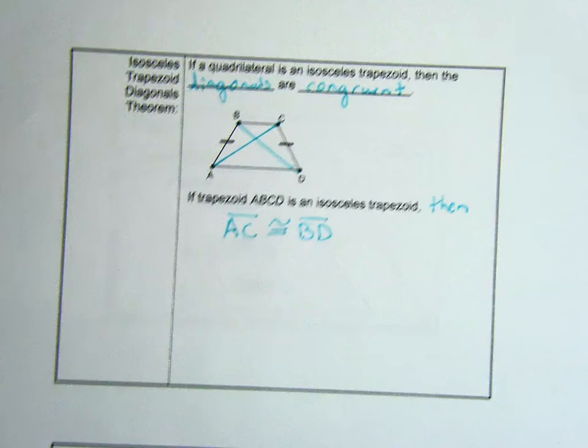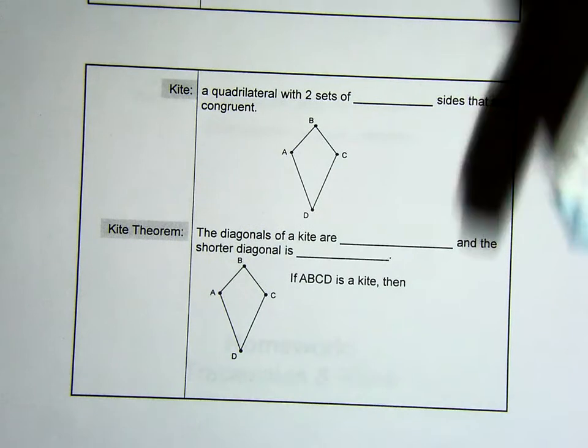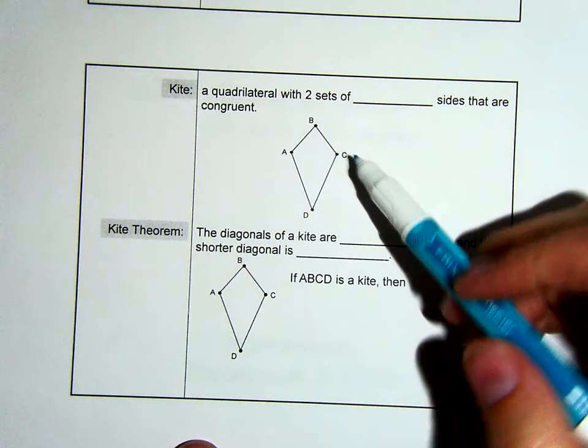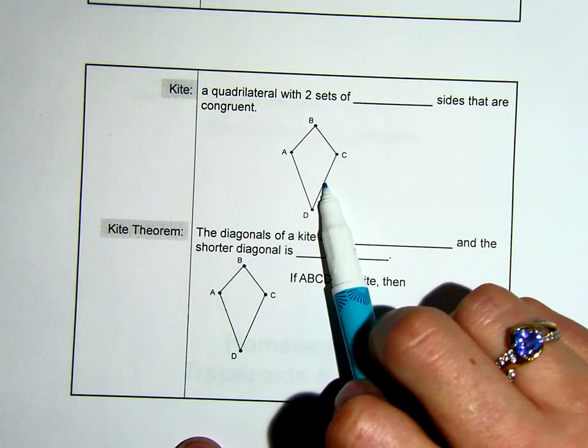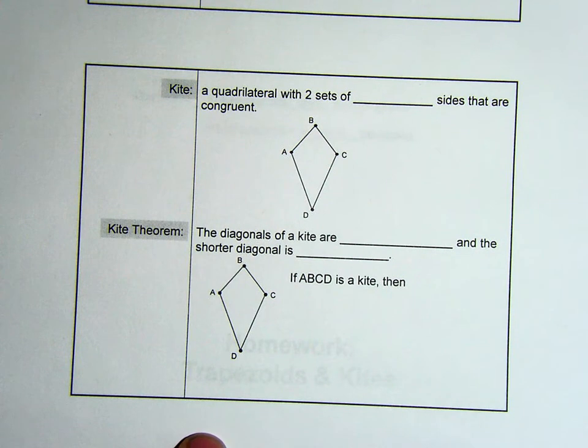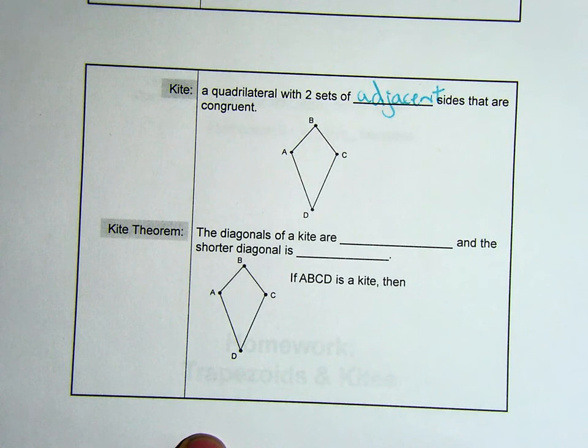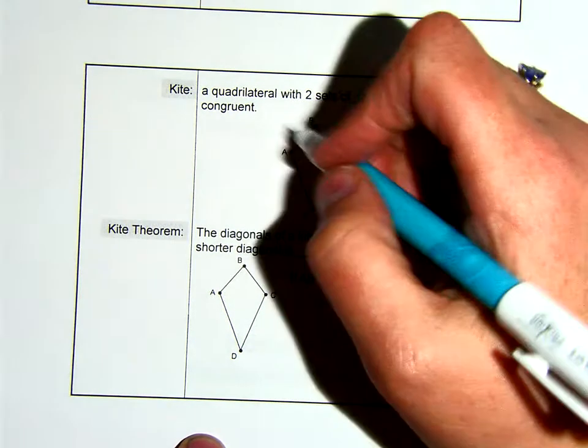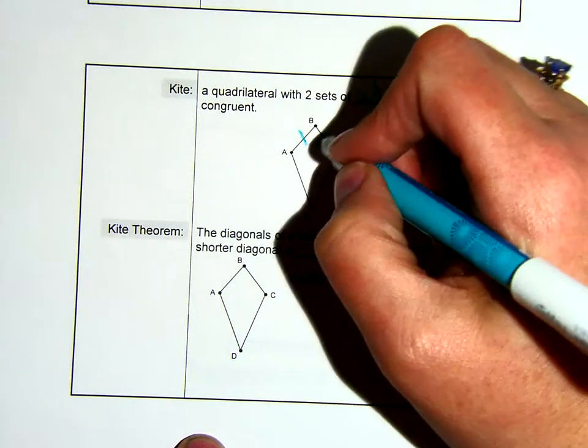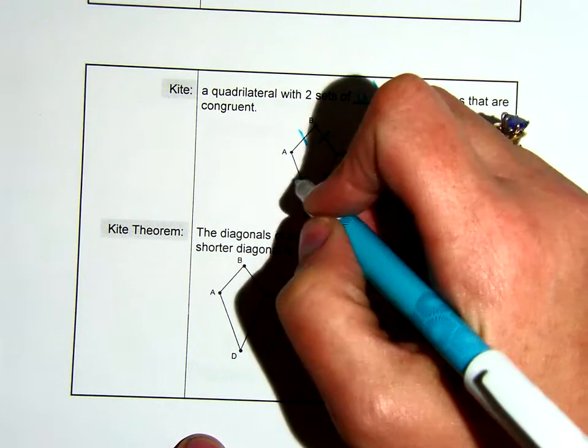Our next quadrilateral is a kite. This shape is not called a diamond. A diamond is not a mathematical term. And if you write that on quizzes or tests, you will not get it correct. Because we need to call the shapes by their proper name. And diamonds, some people think of a rhombus and some people think of a kite. So that's why it's not a mathematical term. But a kite's definition is a quadrilateral with two sets of adjacent sides that are congruent. And if we remember, adjacent means next to. So on my kite, AB is congruent to BC and CD is congruent to AD.